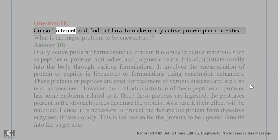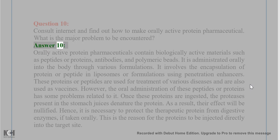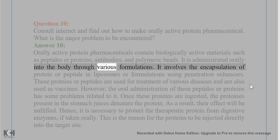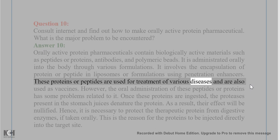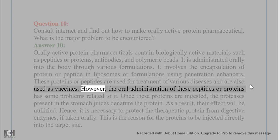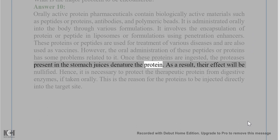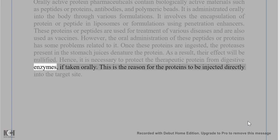Question 10. Consult the internet and find out how to make orally active protein pharmaceuticals. What is the major problem to be encountered? Answer 10. Orally active protein pharmaceuticals contain biologically active materials such as peptides or proteins, antibodies, and polymeric beads. It is administered orally into the body through various formulations. It involves the encapsulation of protein or peptide in liposomes or formulations using penetration enhancers. These proteins or peptides are used for treatment of various diseases and are also used as vaccines. However, the oral administration of these peptides or proteins has problems. Once these proteins are ingested, the proteases present in the stomach juices denature the protein. As a result, their effect will be nullified. Hence, it is necessary to protect the therapeutic protein from digestive enzymes if taken orally. This is the reason proteins are often injected directly into the target site.